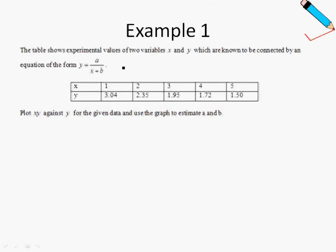In example number 1, we are given this equation: y equals a over x plus b. The question says that we want to plot xy against y. Take note that we will always plot big Y against big X. So the question is already giving me a very big hint that my big Y is xy and my big X is y. Remember in the previous examples in 8.1, we always aim to achieve this scenario whereby we have a line in the form y equals mx plus c.